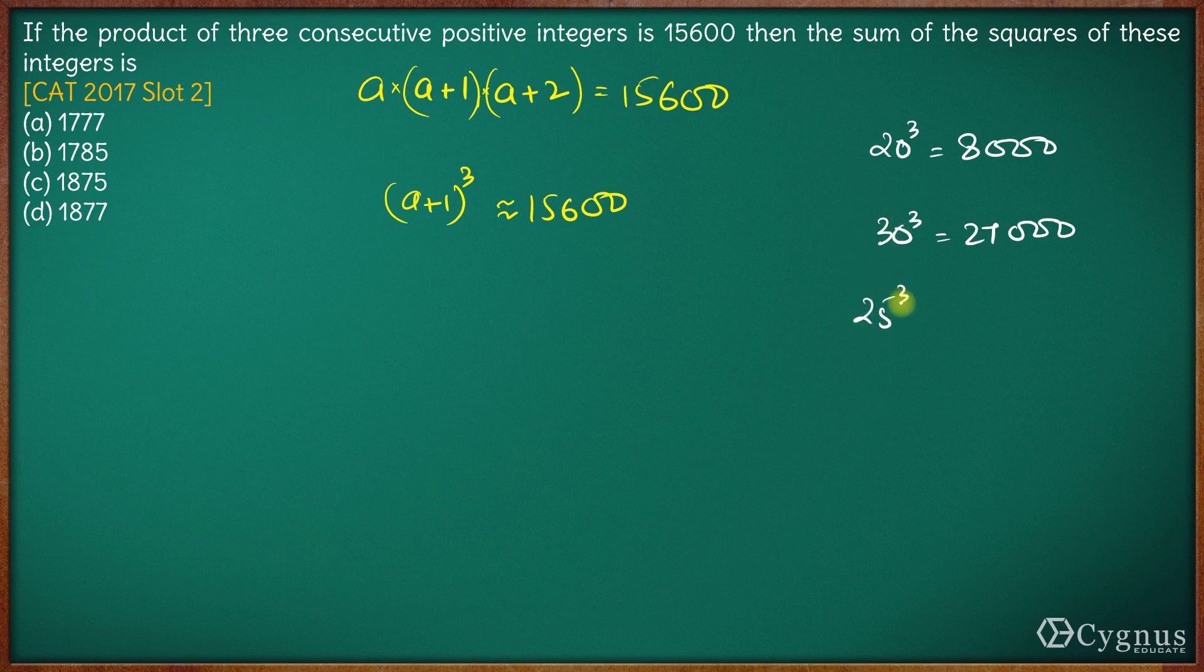So now let's take 25³. Now 25³ is 25² which is 625 into 25. 625 into 25 comes out to be 15625, very close to 15600.